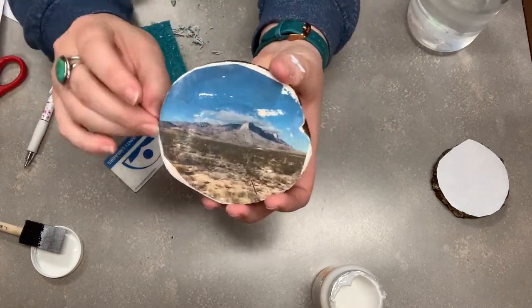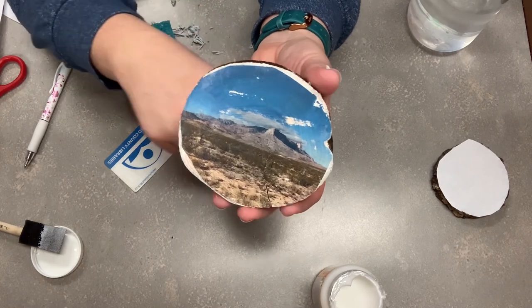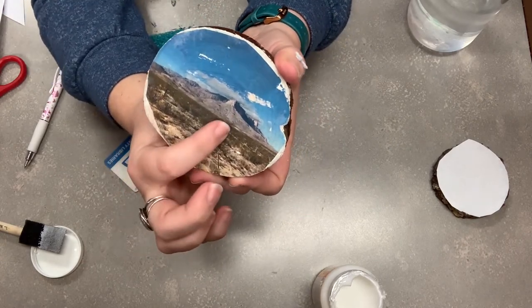The next step, once you have all the paper taken off, is to add another layer of Mod Podge just to protect the surface of the image.